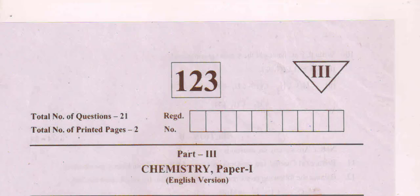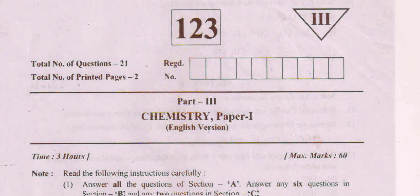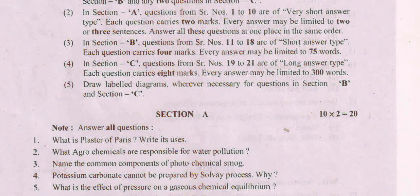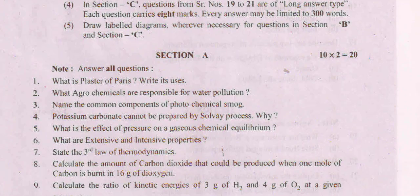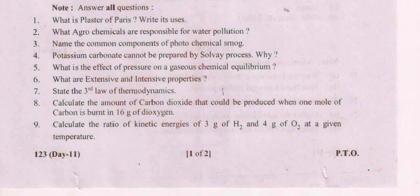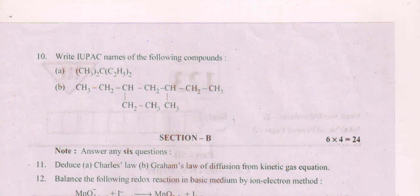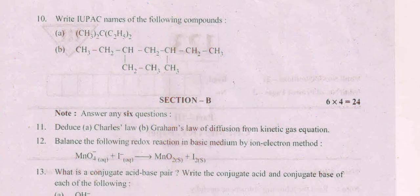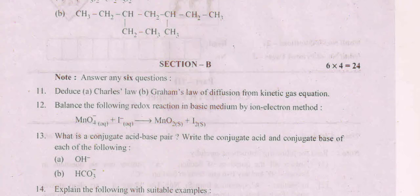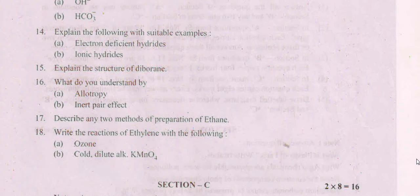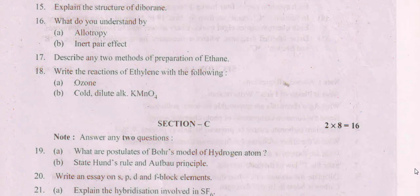Hi students, this is about first year chemistry paper. Section A: 10 into 2 equals 20 marks - the most important. Practice the exact questions. Section B: 6 into 4 equals 24 marks. Section C: 2 into 8 equals 16 marks. These sections are very important for your practice.